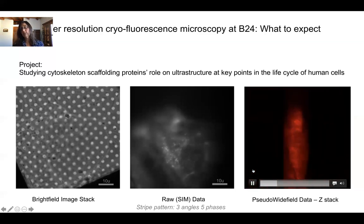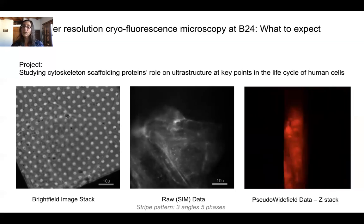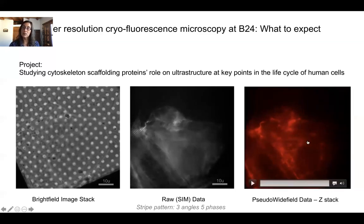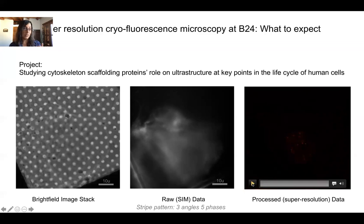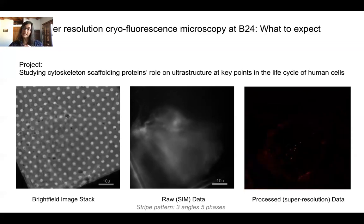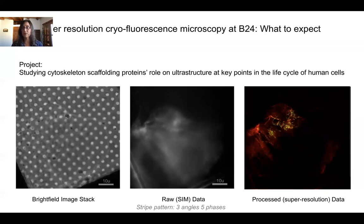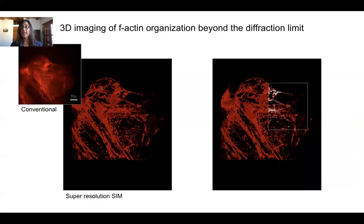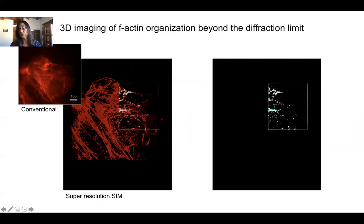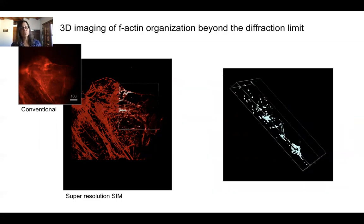If we look at the same sample in pseudo-widefield — conventional fluorescence — you can see it's three-dimensional: the cell and the cytoskeleton fluorescing red, going from the top of the cell all the way to the bottom. When this is processed with CryoSIM, you see very clear separation of all the fluorescent centers and the cytoskeleton in a lot of detail. This takes us from conventional to high-resolution, high-information-content imaging, and we can focus on specific areas such as filaments. Of course, this is entirely three-dimensional.